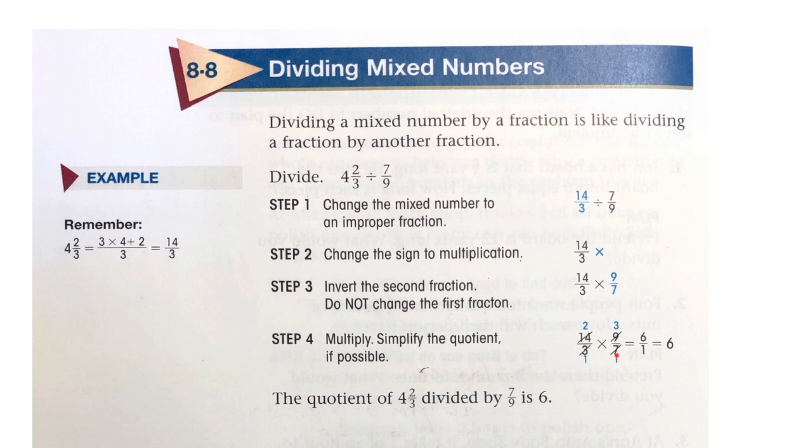7 divided by 7 is 1, 14 divided by 7 is 2, 3 divided by 3 is 1, 9 divided by 3 is 3. 2 times 3 is 6, 1 times 1 is 1. 6 over 1 is 6. The quotient of 4 and 2/3 divided by 7 over 9 is 6.